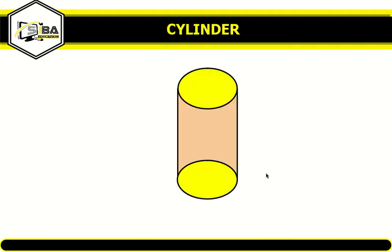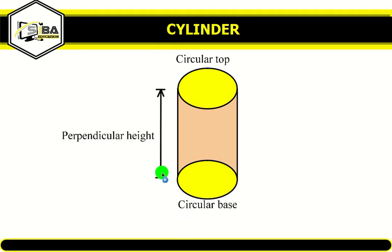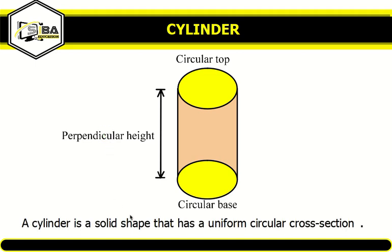The cylinder. As you can see here, it has a circular top, a circular base, and a perpendicular height. Now a cylinder is any solid shape that has a uniform circular cross section.